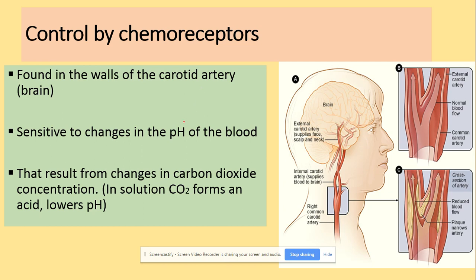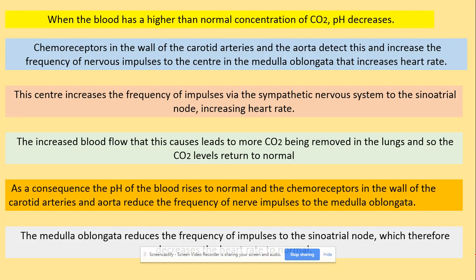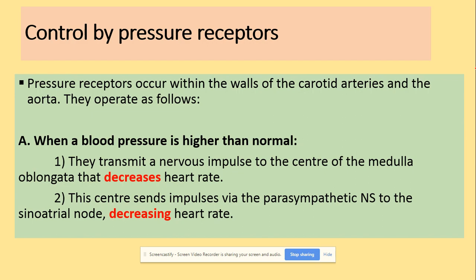In terms of chemical changes, we look at pH. If there's lots of carbon dioxide in the blood due to high levels of respiration, the pH is going to decrease. This is detected by chemoreceptors in the carotid artery. The carotid artery identifies changes in pH caused by increased respiration. If that's the case, we need to speed up the heart rate to deliver more oxygen to respiring cells. Next, we look at control by pressure receptors.